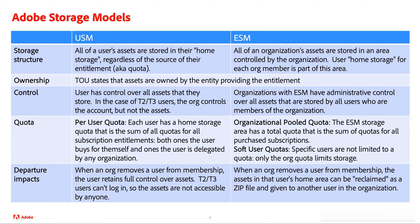In summary, the key difference between USM and ESM pertains to asset storage and asset reclamation. In USM, when an org removes a user, the user retains full control over the assets. Whereas in ESM, upon user removal, the assets stay in the home storage directory owned by the organization.